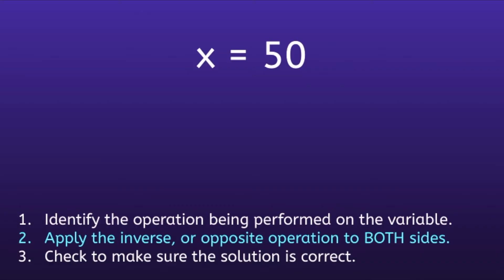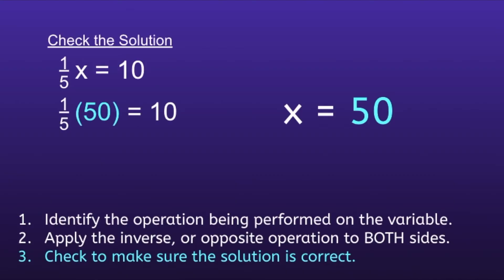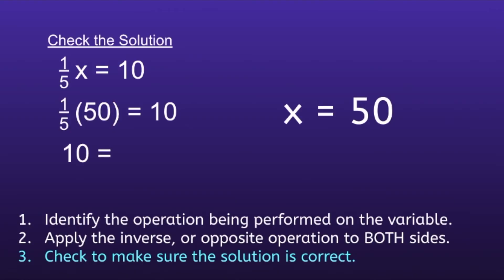We have to make sure that's correct, so we move on to step 3: check the solution. Rewrite the original equation — one-fifth x is equal to 10 — and substitute 50 in for x. We multiply one-fifth times 50 over 1: 1 times 50 is 50, and 5 times 1 is 5. 50 divided by 5 equals 10. One-fifth times 50 is in fact equal to 10, so both sides equal 10 and our solution is correct: x equals 50.